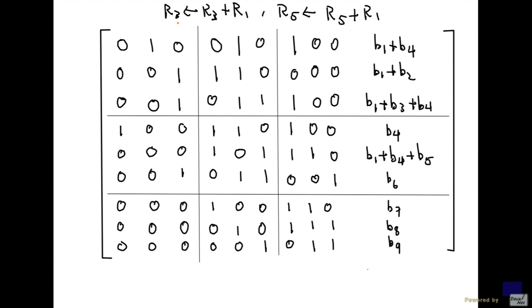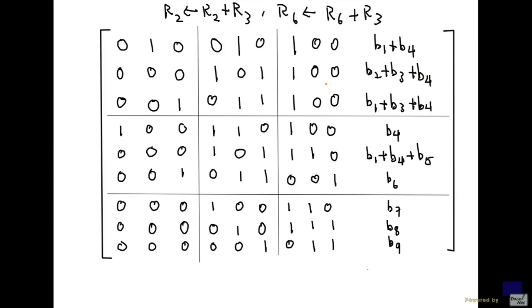Next, replace row 2 with row 2 plus row 3, and replace row 6 with row 6 plus row 3. Adding row 3 to row 2 gives 0, 0, 1, 1, with right-hand side b2 plus b3 plus b4 (since b1 plus b1 becomes 0). Adding row 3 to row 6 gives 0, 0, 0, 0, 1, with b1 plus b3 plus b4 plus b6 on the right-hand side.